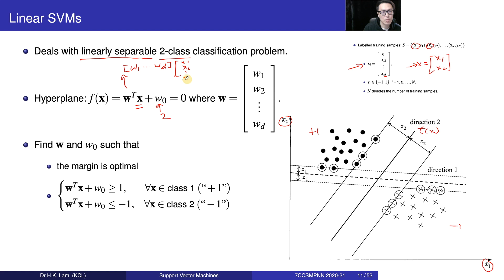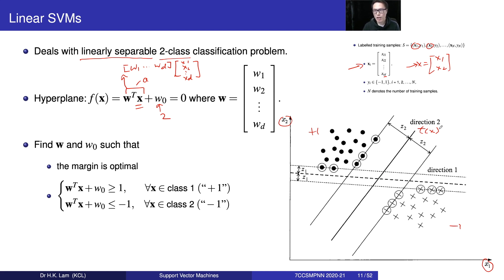x is the vector x1, x2, up to xd. So w transpose times x becomes a scalar — it becomes a scalar, for example a value 'a'. So when we talk about this particular case, f(x) will be w transpose x plus w0.